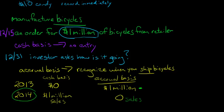So you recognize this. Under accrual, you recognize the transaction when the transaction takes place. You ship the bicycles. You record the sale from the bicycles.